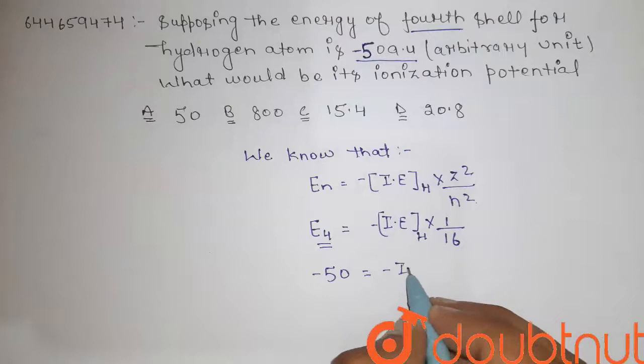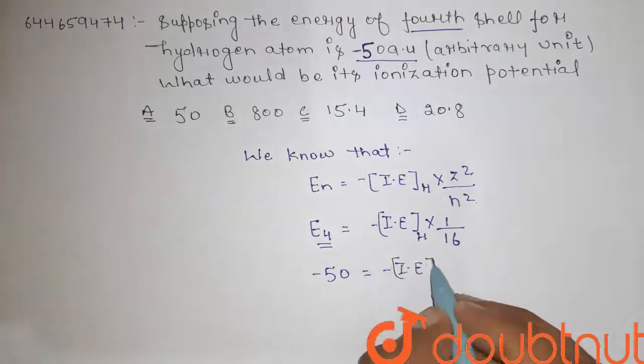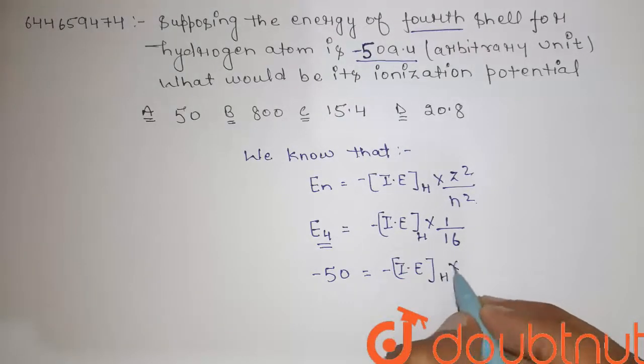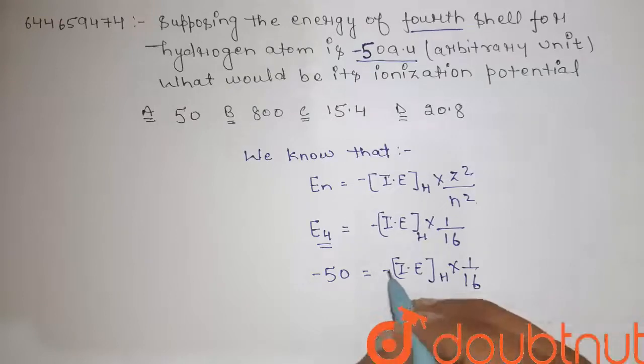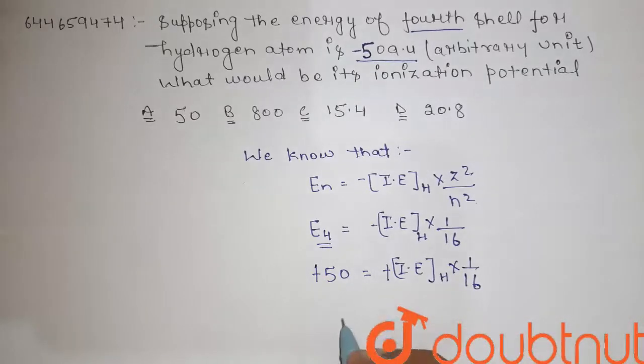So minus times ionization energy, or we can say that ionization potential, negative minus considered minus from here we get...